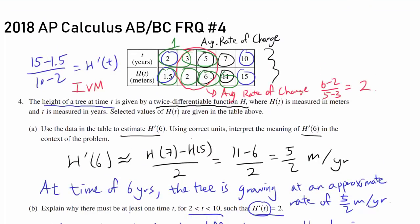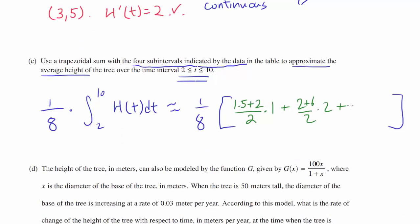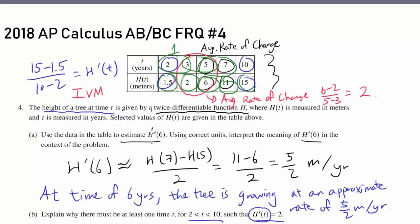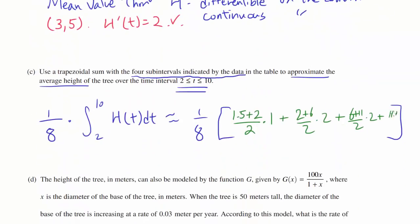And the next one, we have (6 + 11)/2 times the height of 2. Plus finally, we have (11 + 15)/2 times 3.